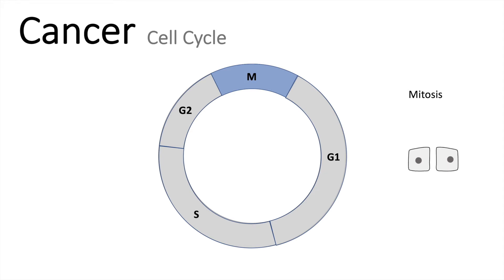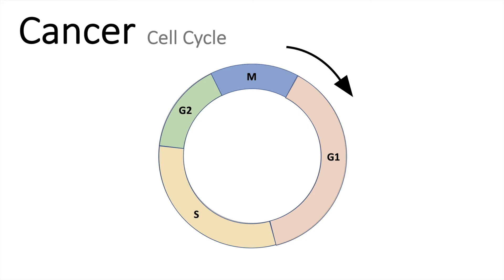We talked about the definition of cancer and we know that they are just cells which completely got out of control. Why did I show you the cell cycle? It is important to mention that there are certain checkpoints at each step of the cell cycle, and they are controlled by proteins. But if one protein in this cell cycle is somehow malfunctioning, it can completely change the cell cycle.